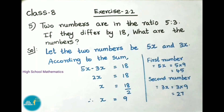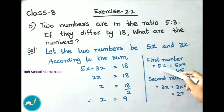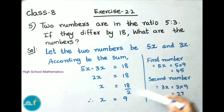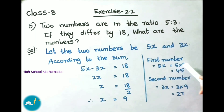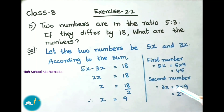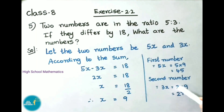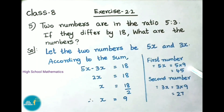Now let us find the numbers. First number we have taken as 5x, that equals to 5 into 9, which is 45. Next, second number we have taken as 3x, that equals to 3 into 9, which is 27. Therefore the numbers are 45 and 27.